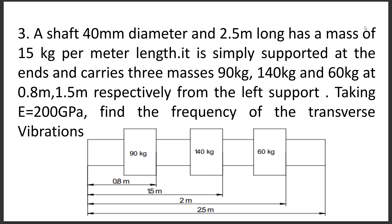Let us see the statement of the problem. A shaft of 40 millimeter diameter and 2.5 meter long has a mass of 15 kg per meter. It is simply supported at the ends and carries three masses of 90 kg, 140 kg, and 60 kg at distances of 0.8 meter, 1.5 meter, and 2 meter from the left support. Taking modulus of elasticity as 200 GPa, find the frequency of the transverse vibrations.